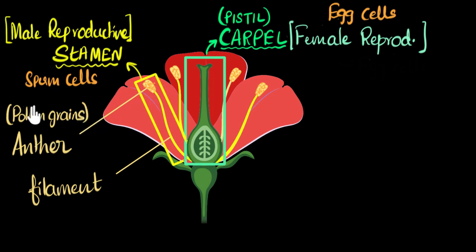And it's inside these pollen grains where you'll find the sperm cells. So the sperm cells of the flower are found inside the pollen grains.